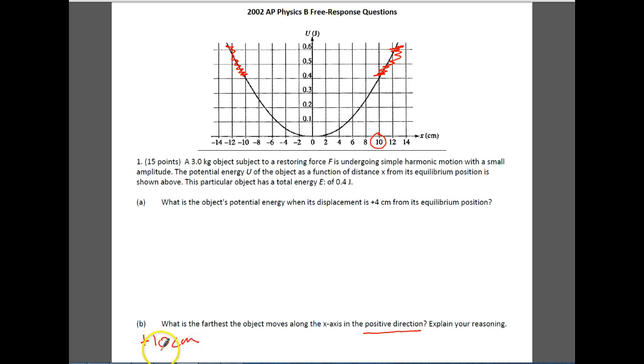So it's going to be positive 10 centimeters. I would make sure to put the positive. If you don't, then they might question what you did. And the reasoning here is the total energy is equal to 0.4 joules. Therefore, the maximum amount of potential energy you can have is also 0.4 joules. If that's correct, then the maximum position that you would have in the positive direction also is 0.10 centimeters because of the graph. And you would probably say, looking at the graph, the maximum potential energy is this because the total energy is this, and therefore that position's got to be about 10 centimeters.